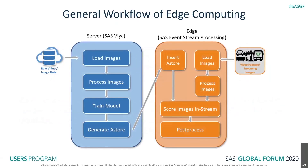Now we have some basic ideas about computer vision as well as the need for edge deployment. This slide presents a typical architecture for computer vision that has a server side for model training and an edge side for online scoring. Model training usually happens on the server using raw images or videos that have been previously collected. We load images to the server, pre-process them if needed — like resizing or cropping — then use them to train a deep learning model. Once we have the model, we save it using a portable binary format called ASTORE so that it could be deployed to various types of devices.